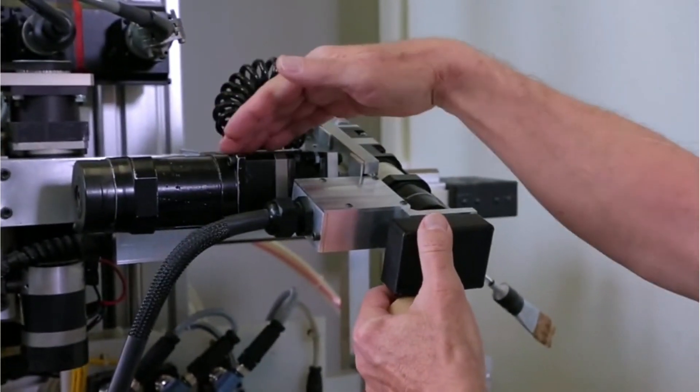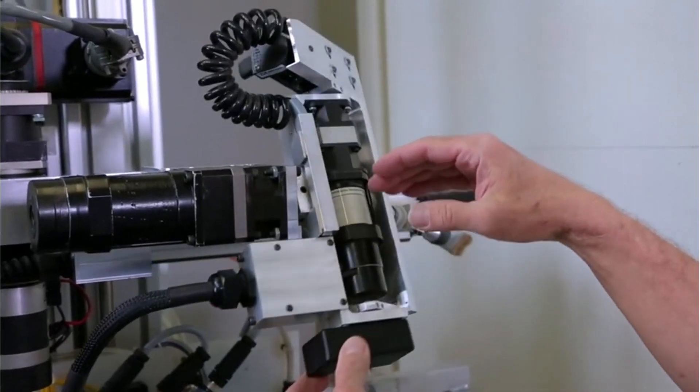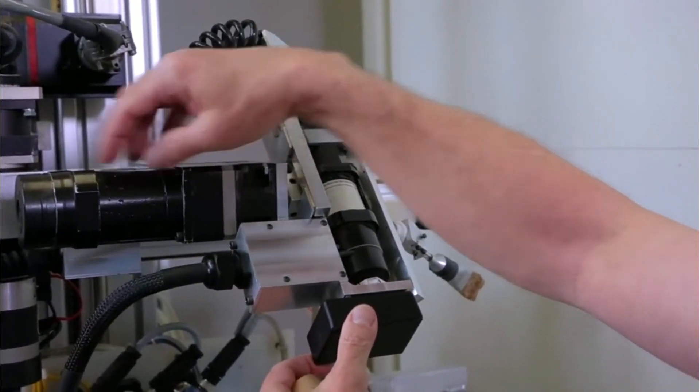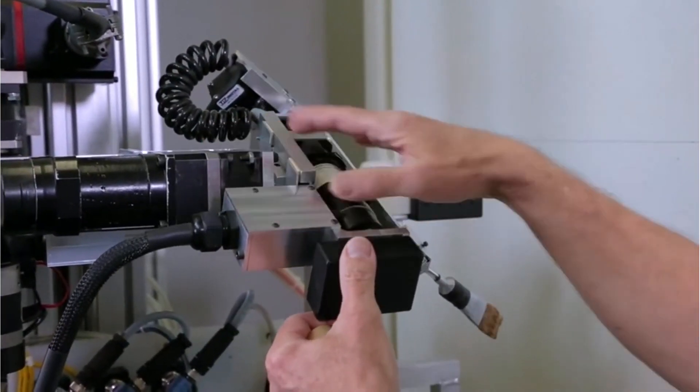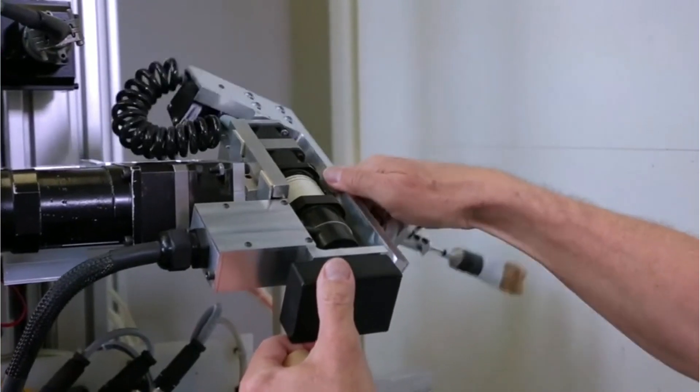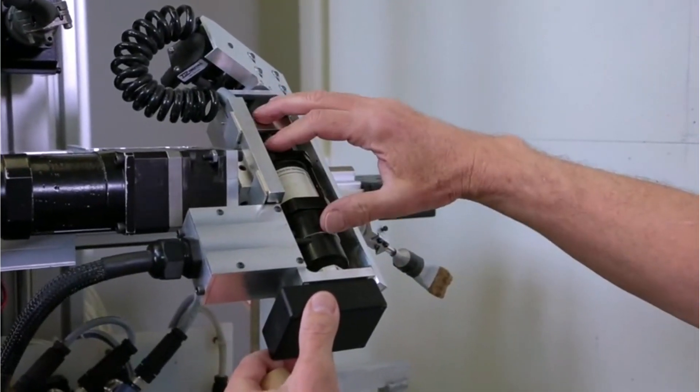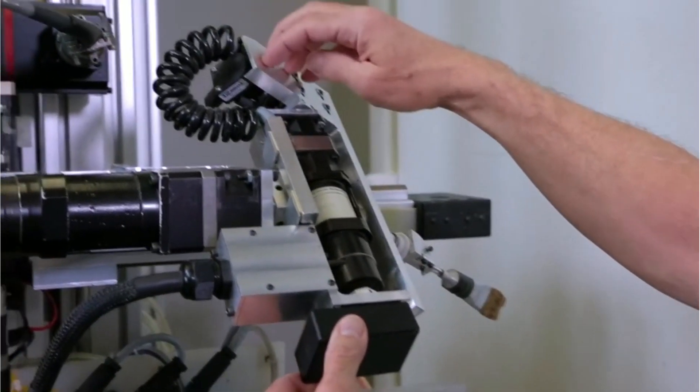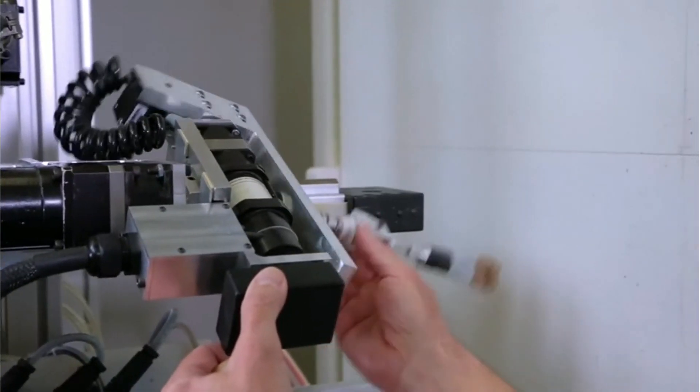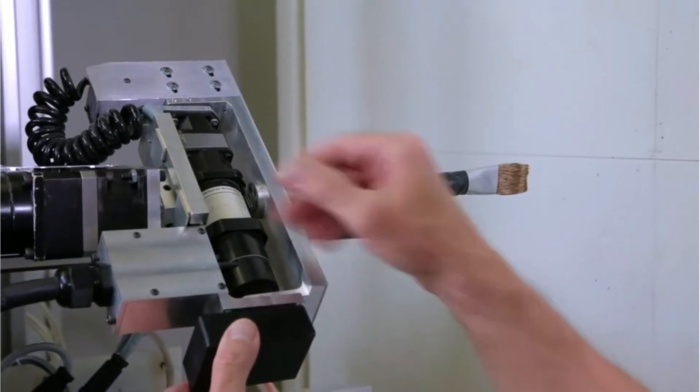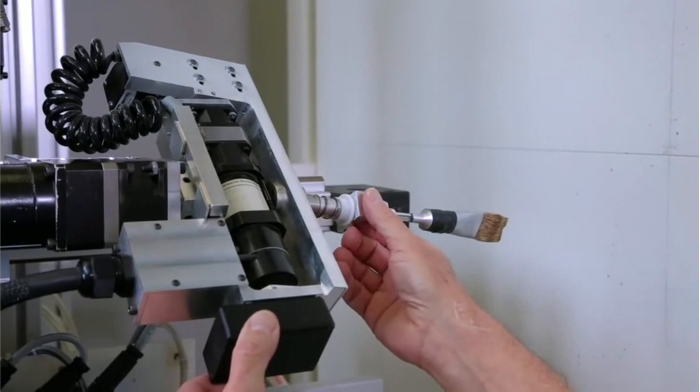So this is the first roll, roll one. You have the motor, the gearbox, and the encoder. Connected to that is the pitch, which is this motor, gearbox, and encoder. And then behind here is a timing belt to the third axis, which is roll two. So you have your roll, your pitch, and your roll.